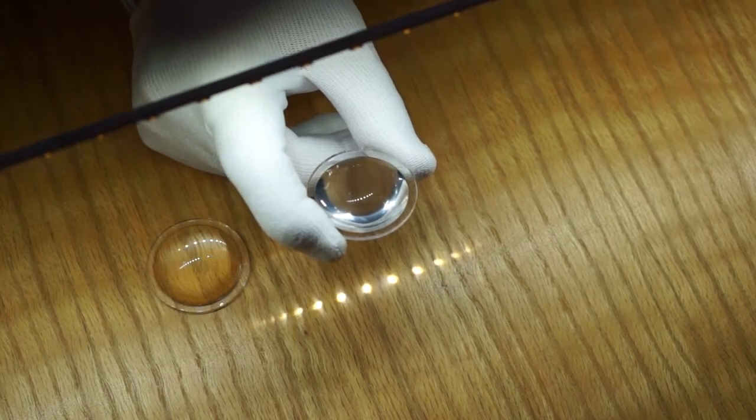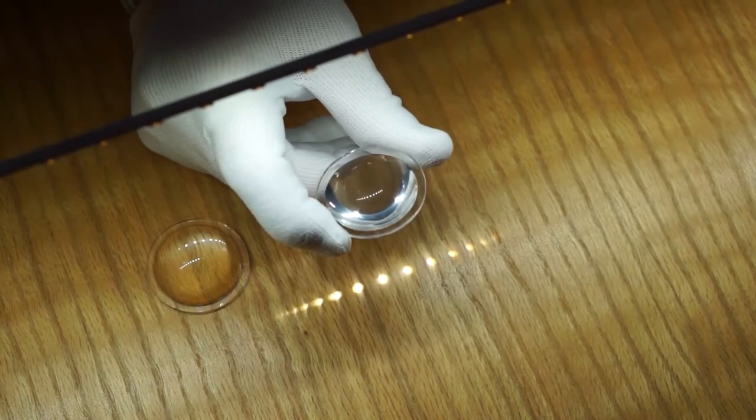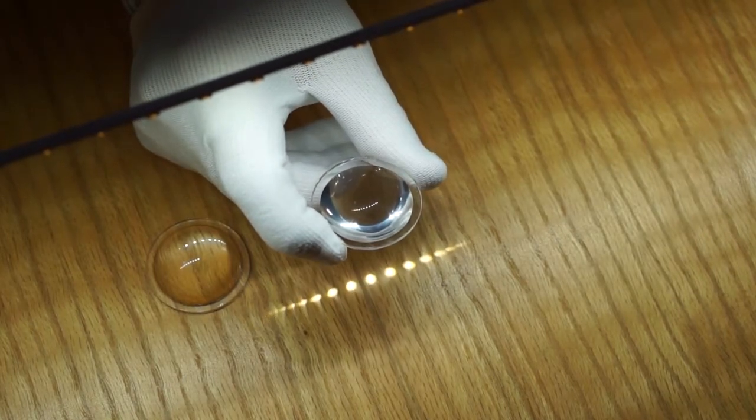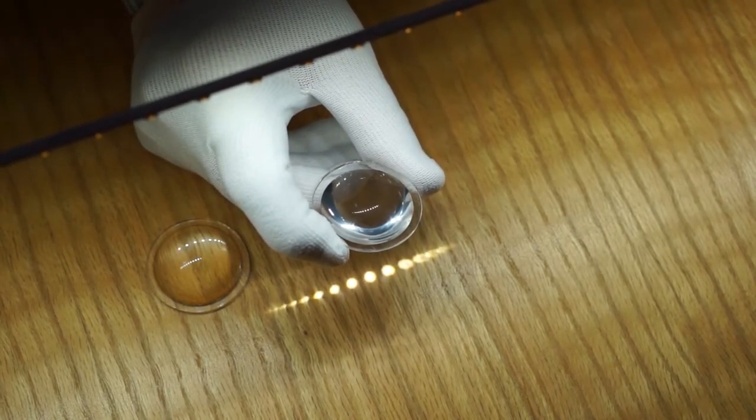Made with Dow Corning MS-1002 or 1003 moldable silicone, this lens back is flat with no dips or sink which is hard to achieve in plastic.